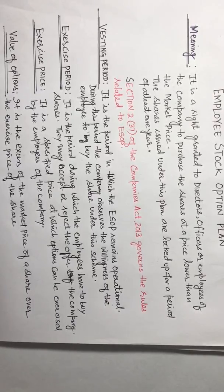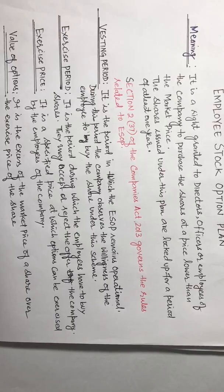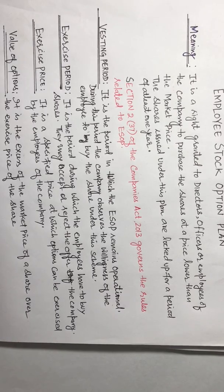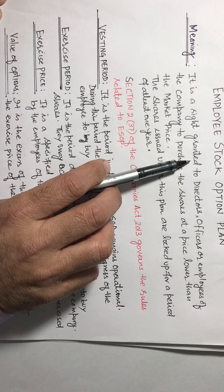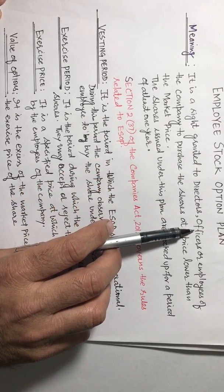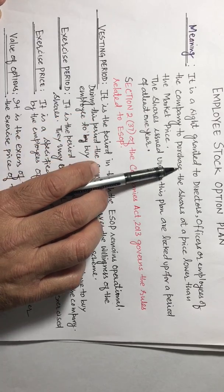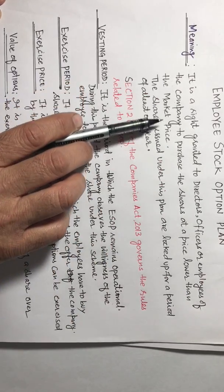Today's topic is Employee Stock Option Plan. This year a theory question is expected from this topic, so kindly understand the theoretical aspect of Employee Stock Option Plan. It is a right granted to directors, officers, or employees of the company to purchase the shares at a price lower than the market price.